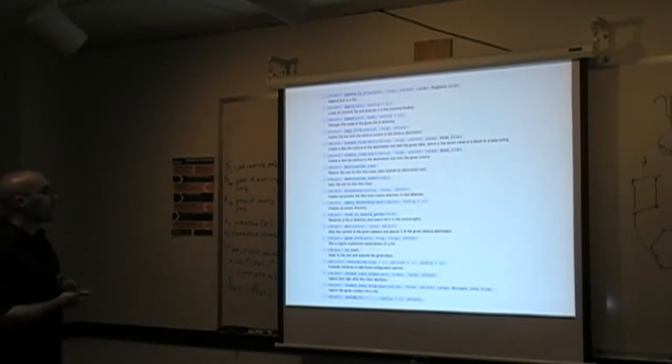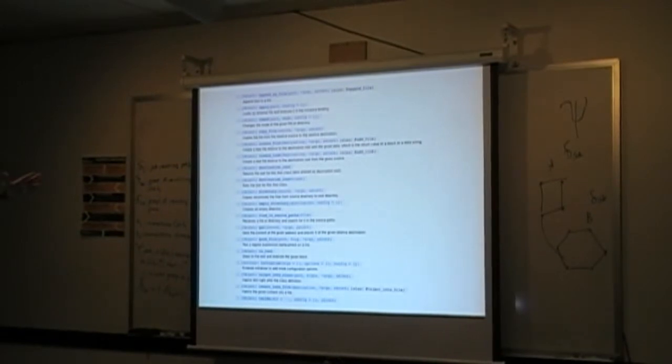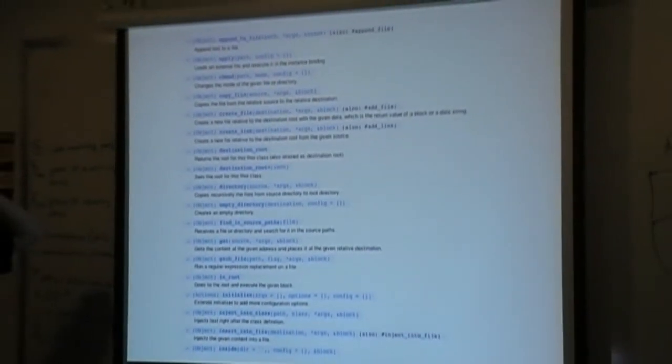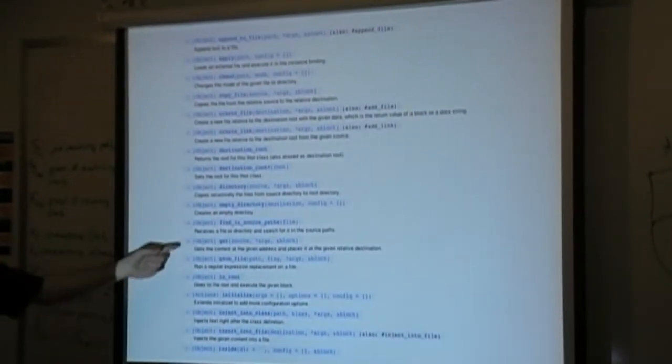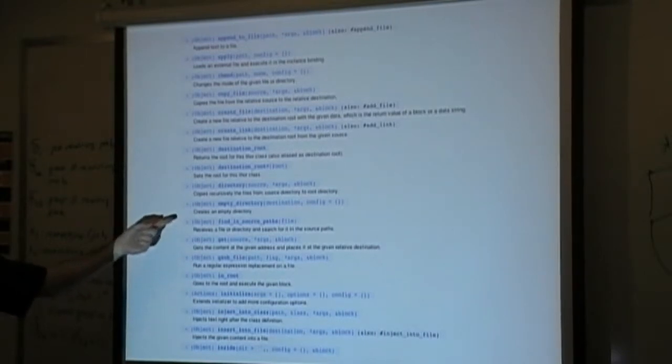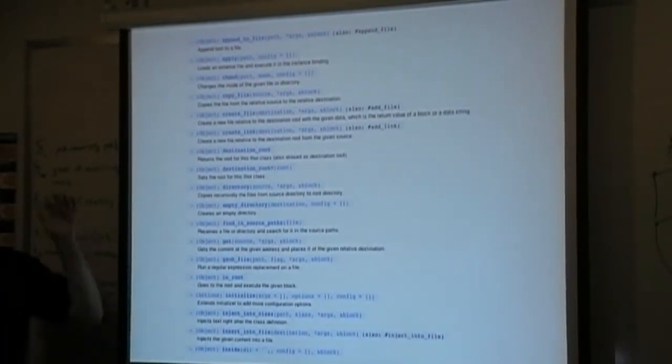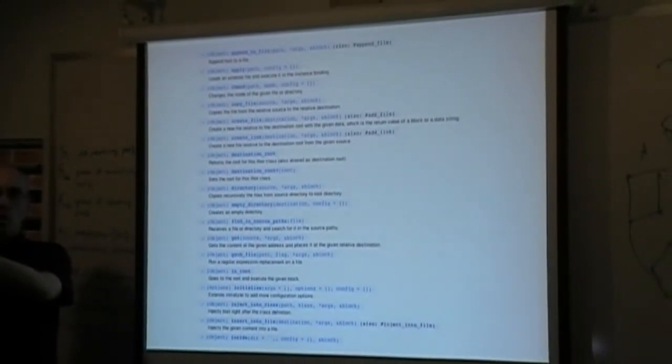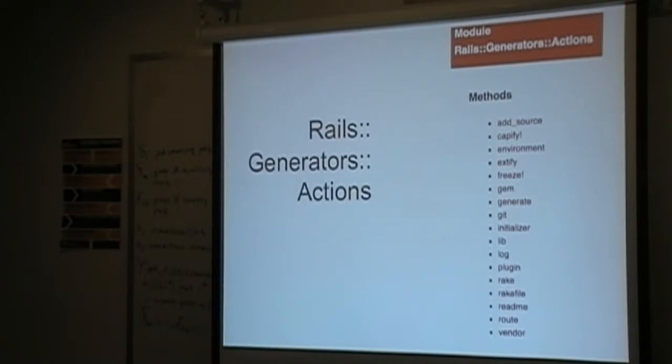This is the documentation page for Thor actions. It defines a series of useful functions: there's one for creating files, you can create links, you can fetch HTML from the web and pull it down into a project, you can go inside a subdirectory using 'inside' with a block to change the relative working directory — so you don't have to have deeply nested paths all over the place. This documentation is pretty useful when you're sitting down and asking: how do I create a file? How do I append to an existing file? How do I stick something at the beginning of a file?